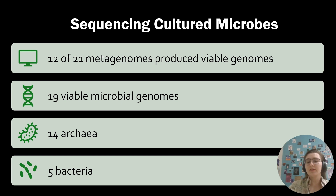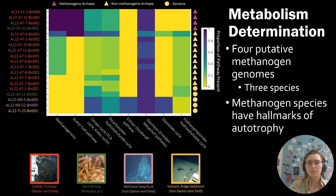These viable genomes include 19 microbial genomes: 14 archaea and 5 bacteria. Of our 19 genomes, 4 were methanogens. All of these methanogens had hallmarks of autotrophy, indicating that they are likely the chemolithoautotrophs that support the ecosystem in this area.